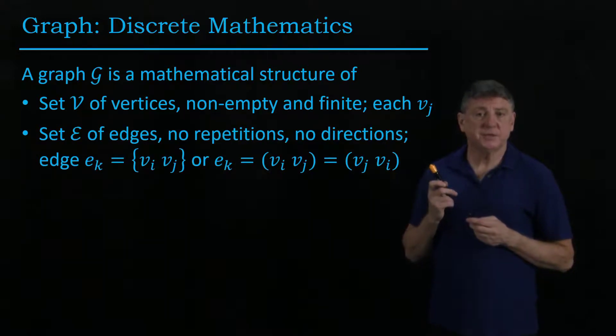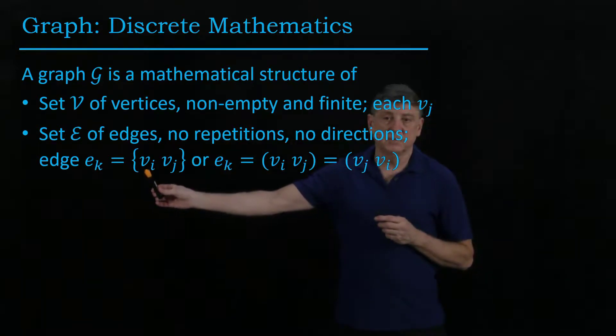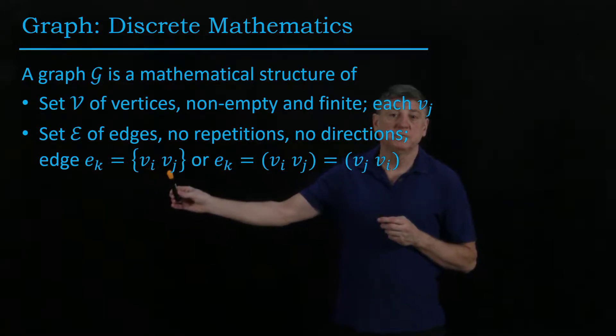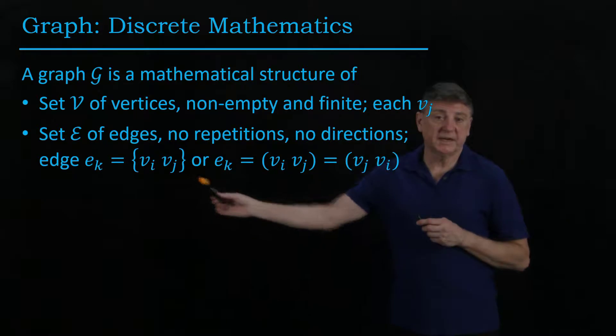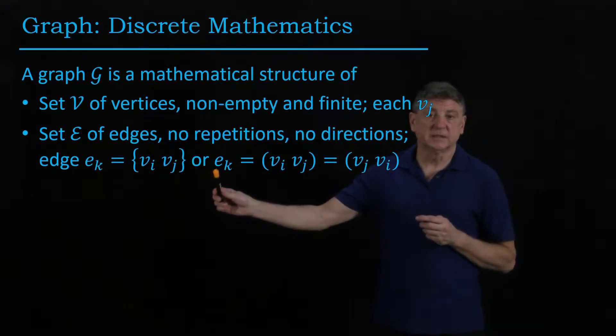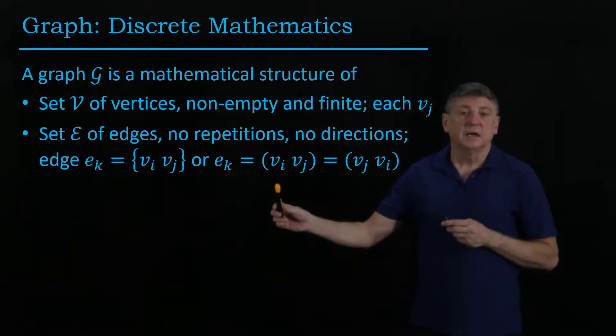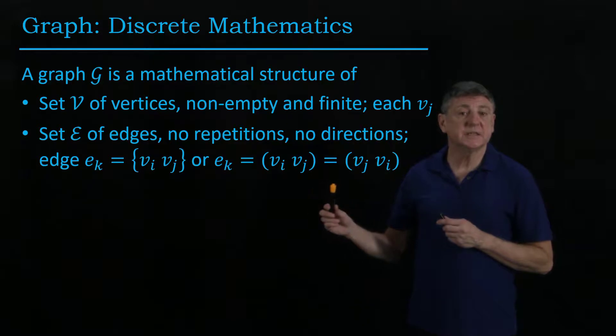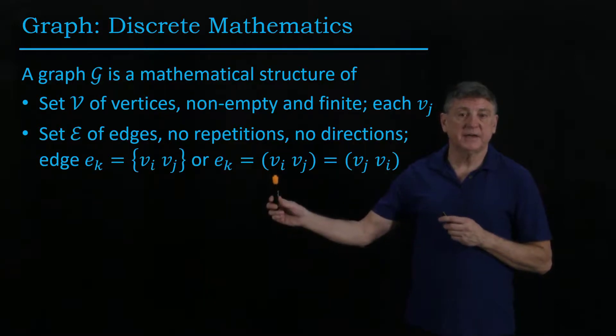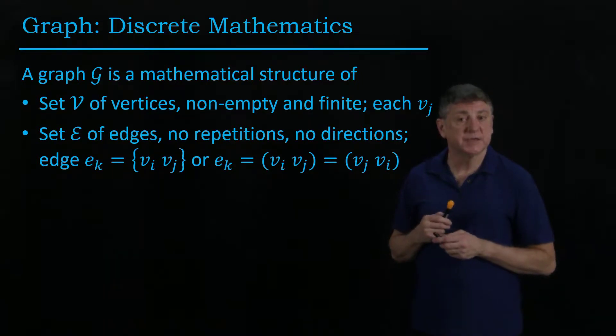A set of edges is, in our case, a set of two vertices. An edge will connect two of these vertices. We'll write this as the letter E, and we'll subscript it with an integer, and here let's observe that this doesn't have a direction. That is, we could write an edge as IJ, or we could write the edge as JI. It's still the same edge.